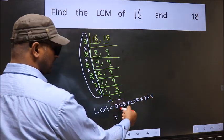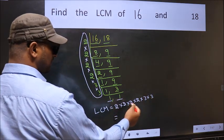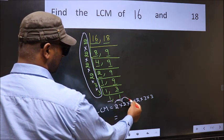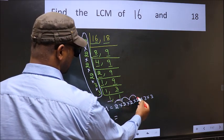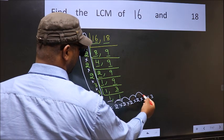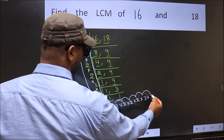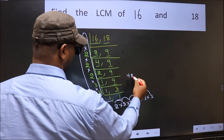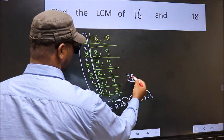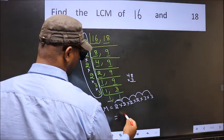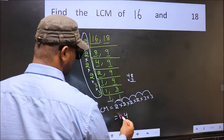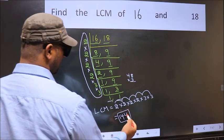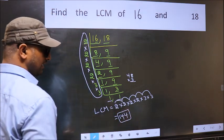So let us multiply these numbers. 2 into 2 is 4, into 2 is 8, into 2 is 16, into 3 is 48, into 3 — 3 times 8 is 24, carry 4, 2, 3, 4 — 12 plus 2 is 14. So 144 is our LCM.